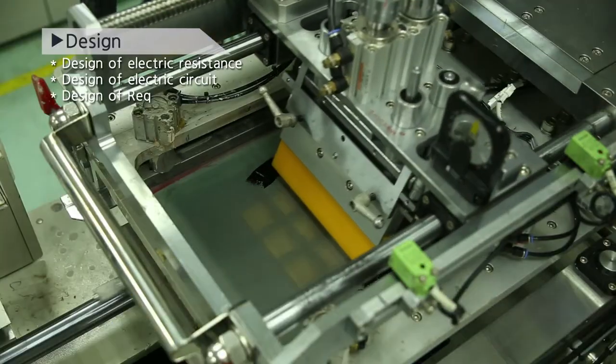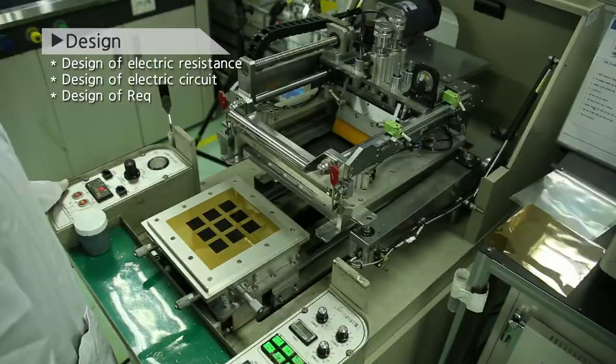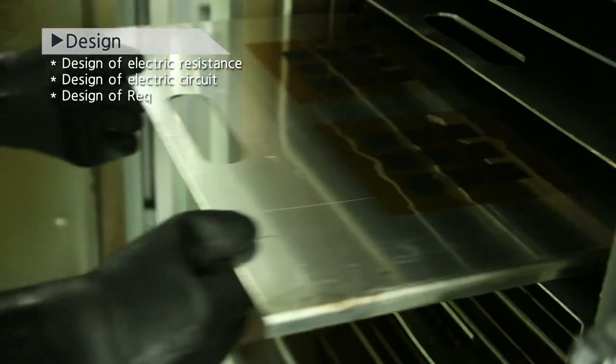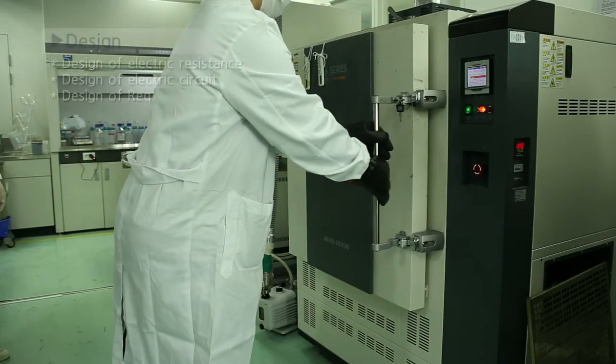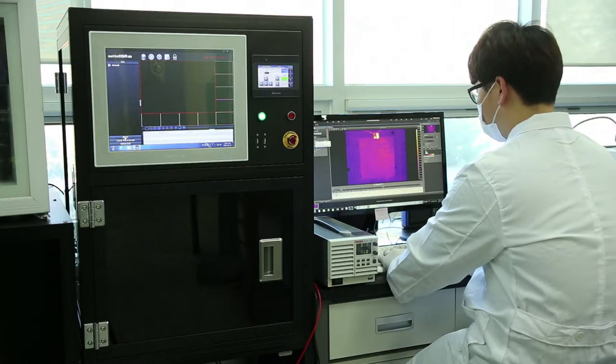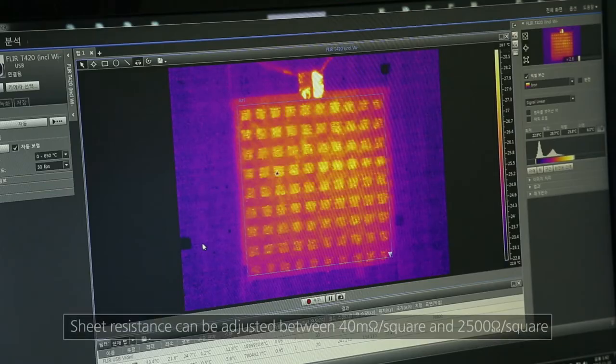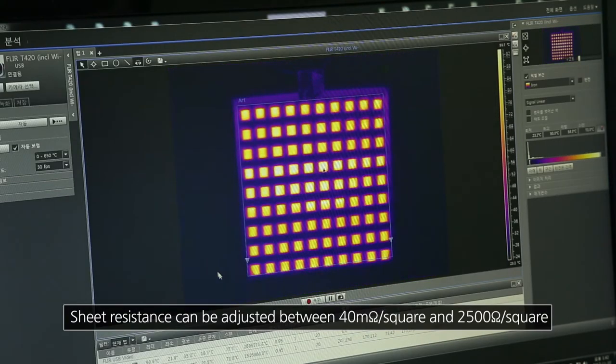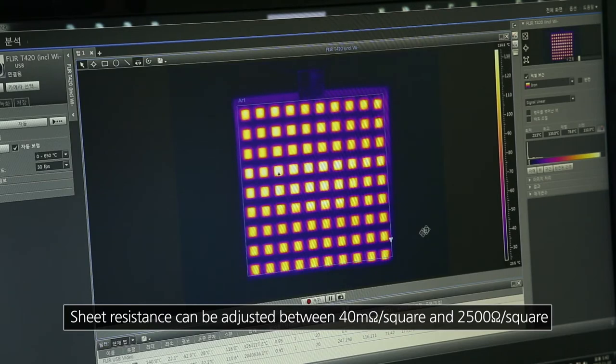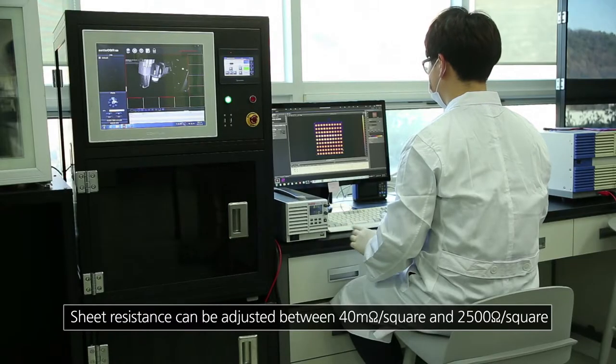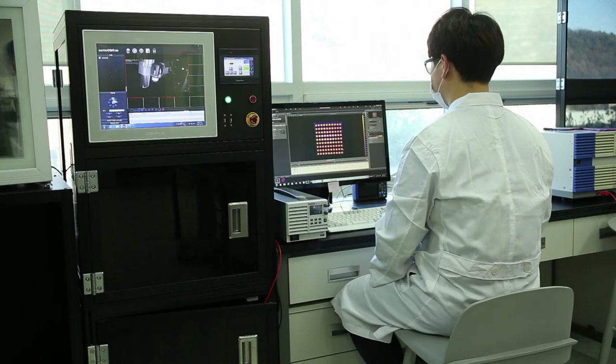The heating element developed by KETI can control the heating performance based on a function consisting of the applied voltage, sheet resistance, and wiring structure. It also gives more freedom to design as the sheet resistance can be adjusted between 40 milli-ohm per square and 2,500 ohm per square.